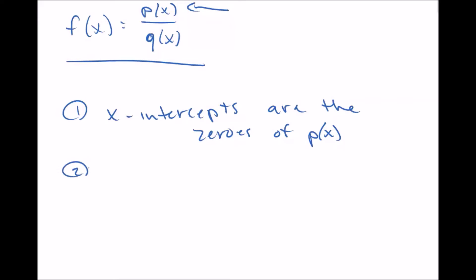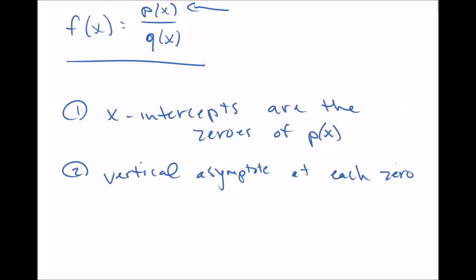The second thing you need to know is this graph has a vertical asymptote — that's a line that runs straight up and down — at each zero of q of x. So if you want to find where the vertical asymptotes are, you set q of x equal to zero, solve, factor it, graph it, whatever you need to do. Those are going to be your vertical asymptotes.